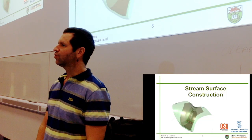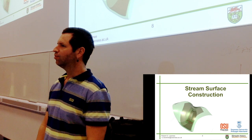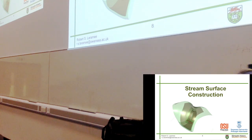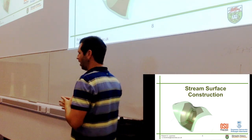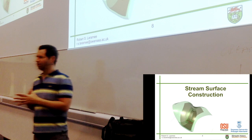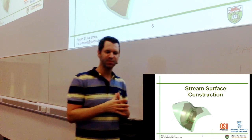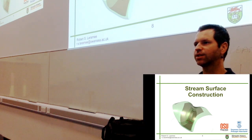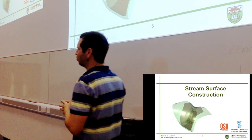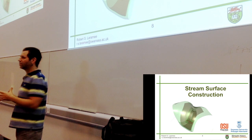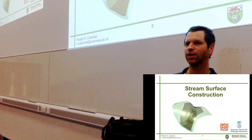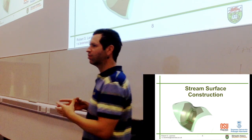Any questions so far about the stream ribbons, stream tubes, and the seeding dimensionality? Just as a little review, we started out FlowViz by introducing the different subcategories: direct, geometric, texture-based, and feature-based. And now we're talking all about the geometric flow visualization techniques. This is where we spend the most time — the geometric flow base — where we compute a discrete object whose properties reflect the characteristics of the flow.